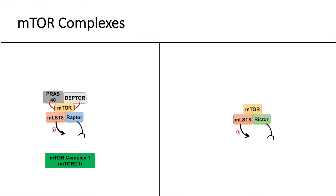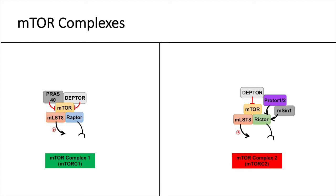mTOR complex 2 also contains MLST8, which has the same stabilizing function as it does in mTOR complex 1. It also has DEPTOR, plus two additional proteins — PROTOR1 and 2, and mSIN1 — which have regulatory functions in the complex. Together, all of these proteins make up mTOR complex 2.